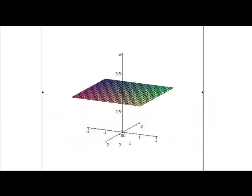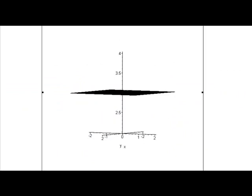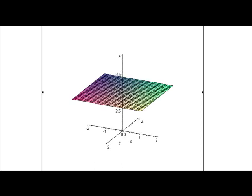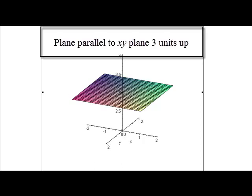So here's our plot. Notice we have a plane. It goes through the point where z equals three. And it's parallel to the xy plane. So in describing this surface we would call it a plane that is parallel to the xy plane that goes through z = 3.